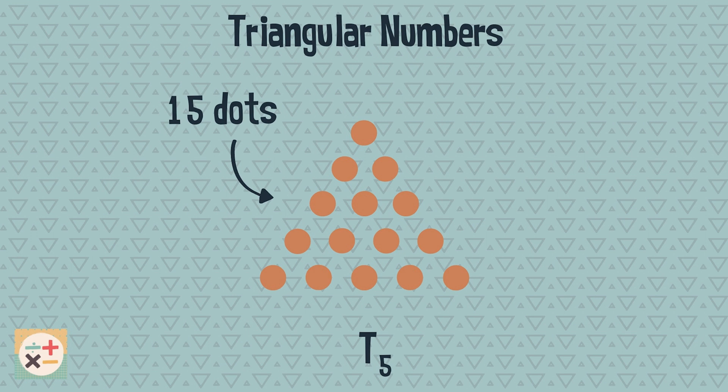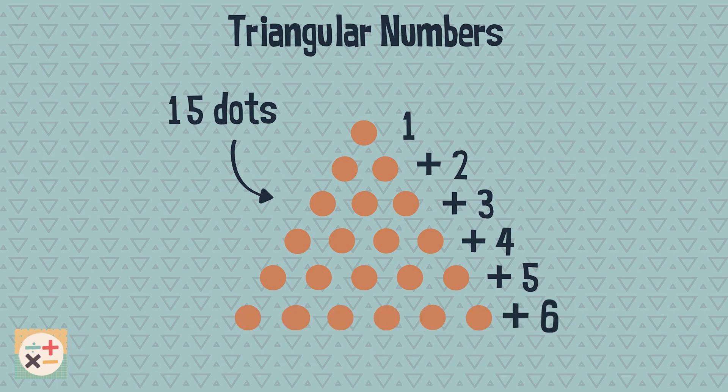Well, firstly you may have noticed that the fifth triangular number is the sum of one, two, three, four and five. Each triangular number is calculated this way. So for the sixth triangular number we add six to the fifth triangular number.